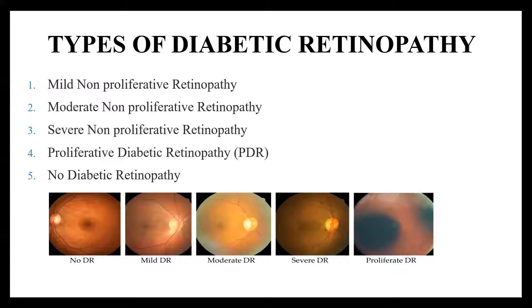The fourth stage is proliferative diabetic retinopathy, which is the advanced stage of the disease in which new blood vessels form in the retina. The last stage is no-diabetic.